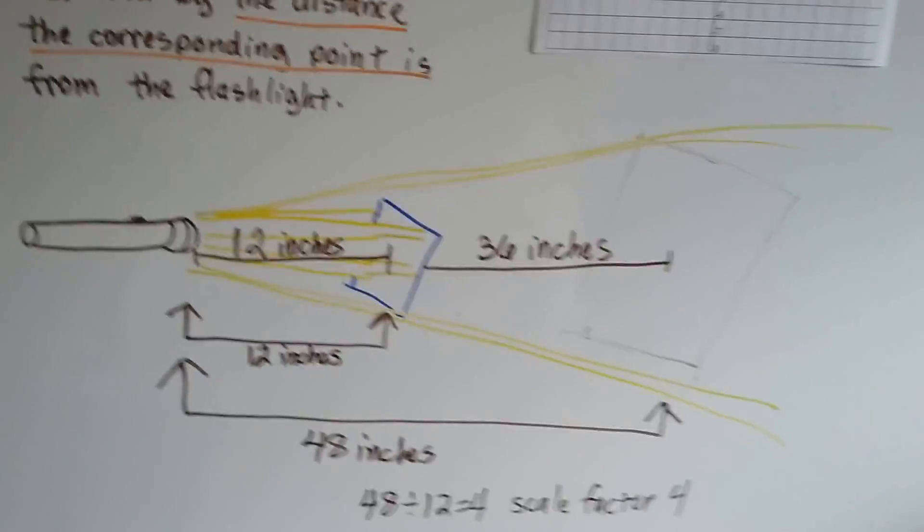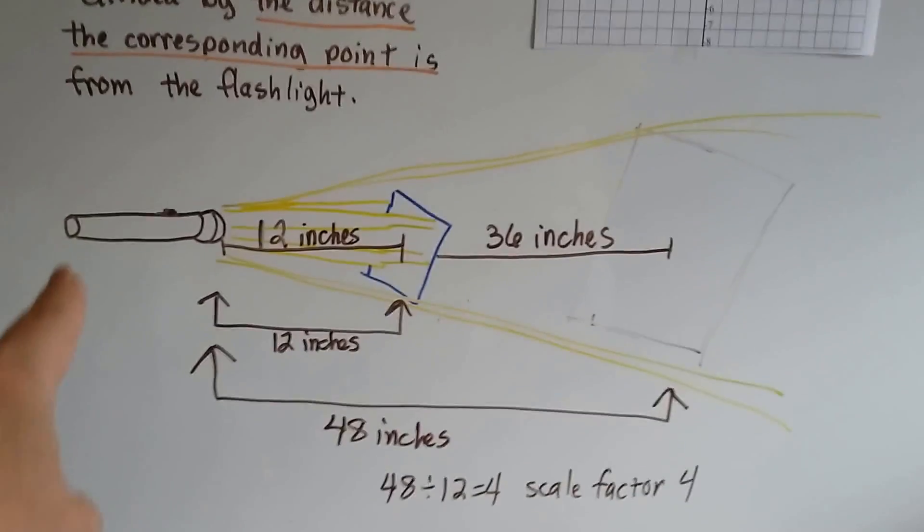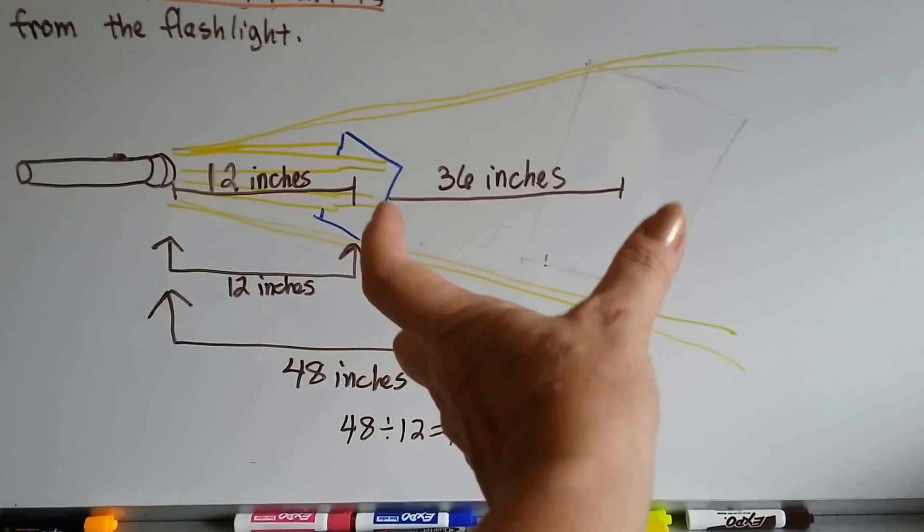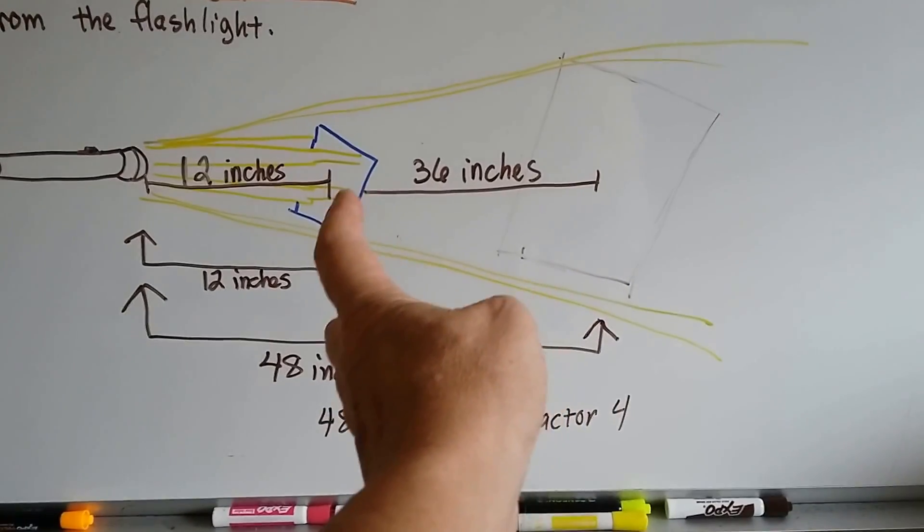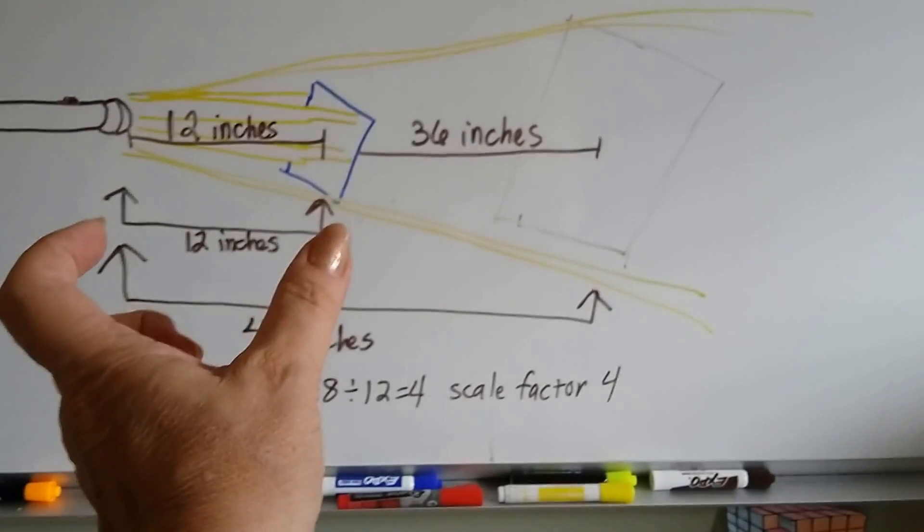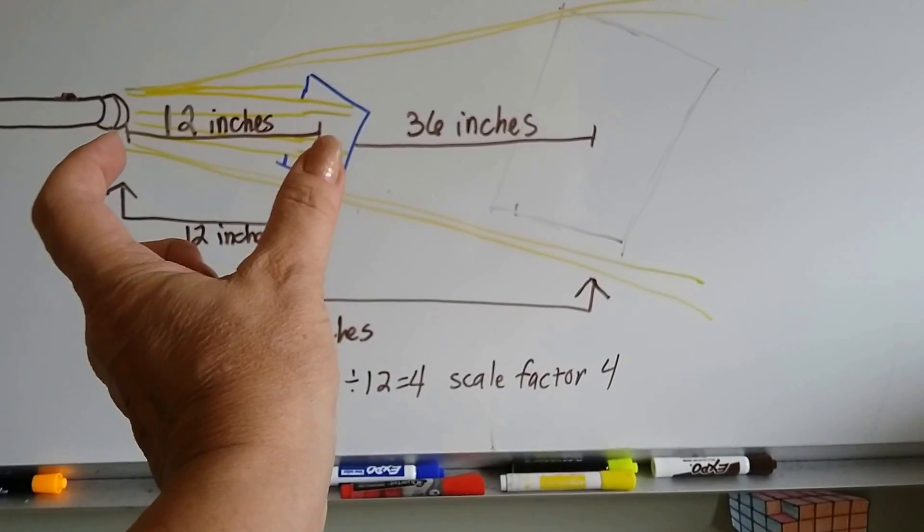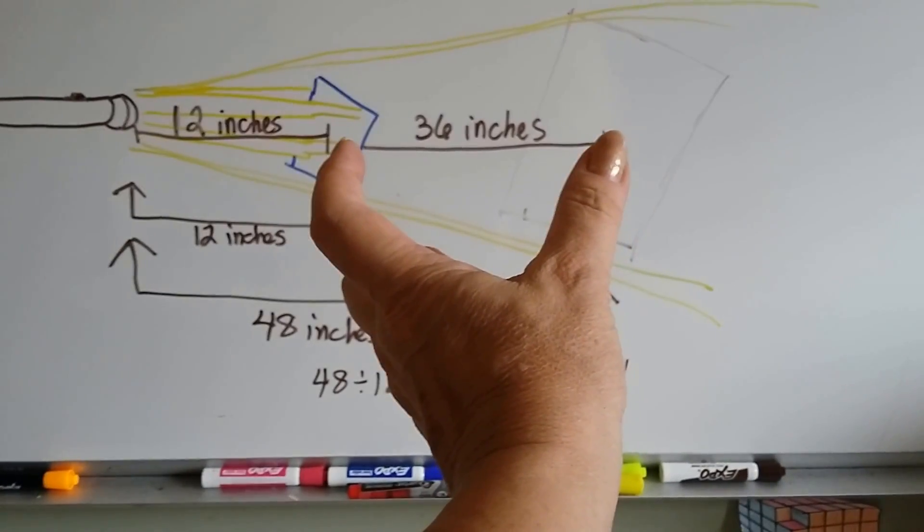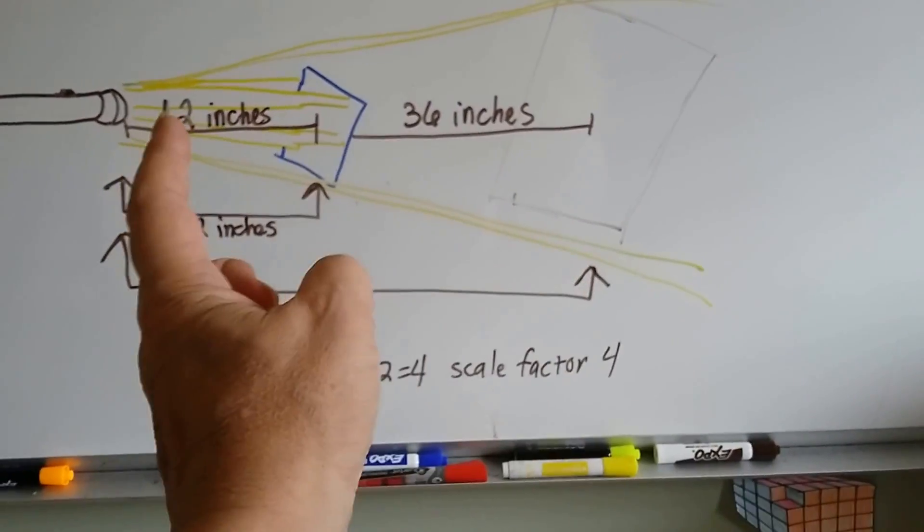Now, what's happening is, for the scale factor, if my flashlight is 12 inches away from my little square of paper, and then there's a 36 inch gap between my square and the wall that's making that shadow, what you do is you take the 12 inches distance from your square, and you take the distance that the square is from the wall where the shadow is, you add them together, so that's 48 inches.